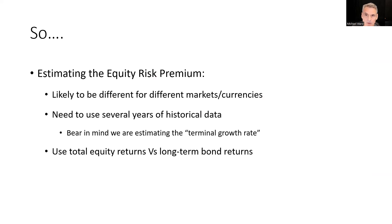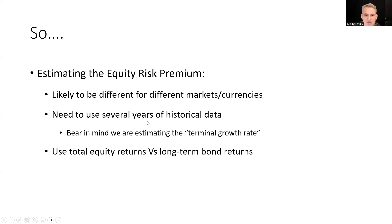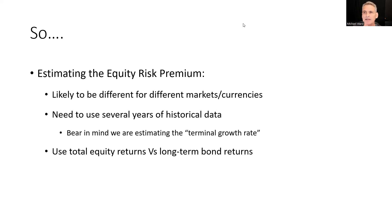Summing up: when estimating the equity risk premium, we're looking for a long-term constant that gives the return shareholders will get over the next 10 to 20 years. It's likely to differ for different markets and currencies. We need several years of historical data rather than a spot rate. We should use total equity returns including dividends and after corporate actions, compared against long-term bonds rather than bills.